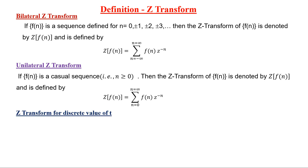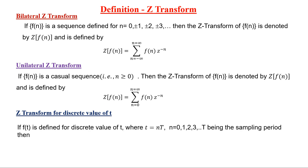The next one is the Z-transform for discrete values of t. If f(t) is defined for discrete values of t where t equals n·T, for n equals 0, 1, 2, 3, etc., T being the sampling period, then the Z-transform is Z{f(t)} equals the summation from n equals 0 to infinity of f(nT)·z^(−n). These are the classifications of the definition of Z-transform.